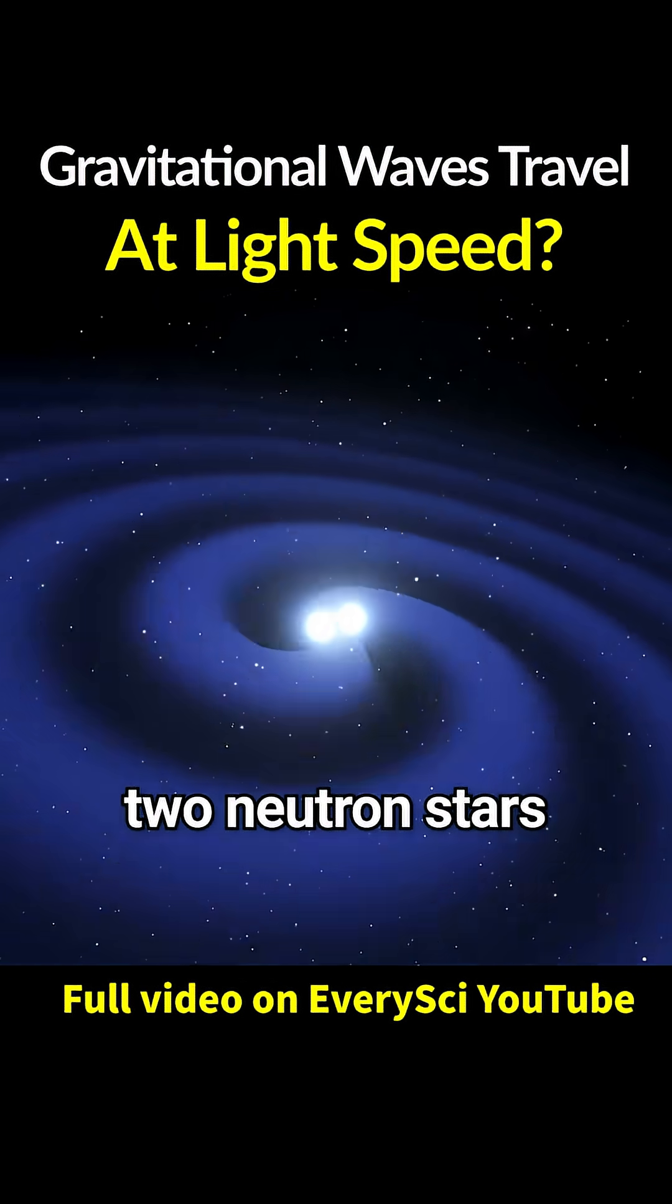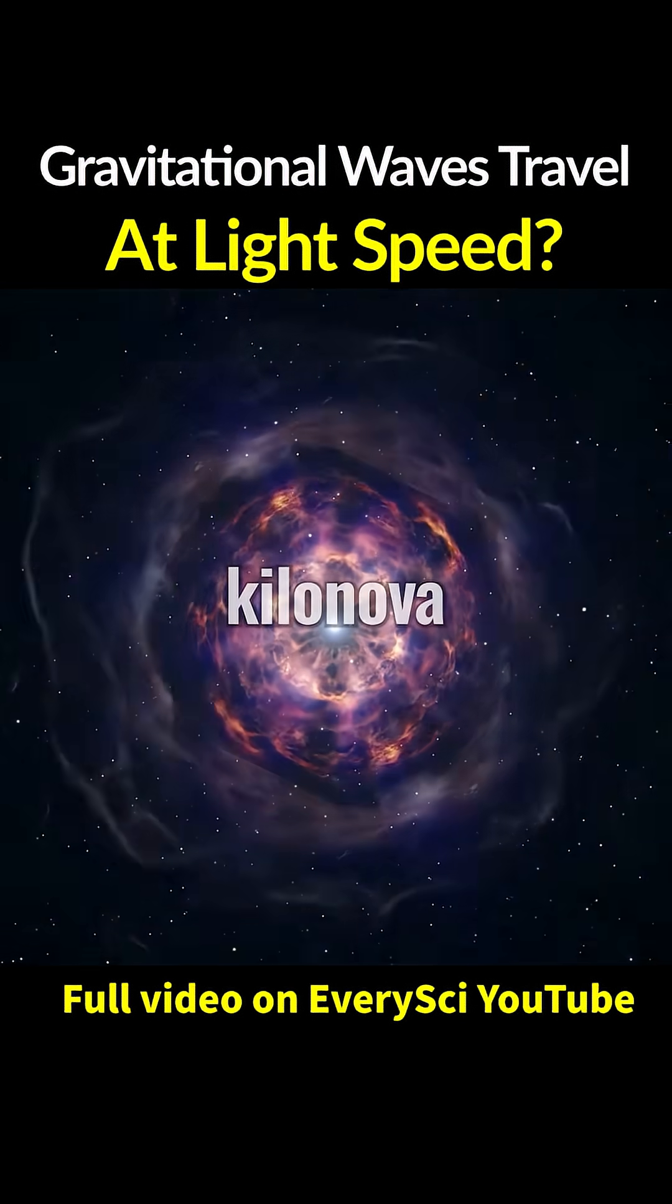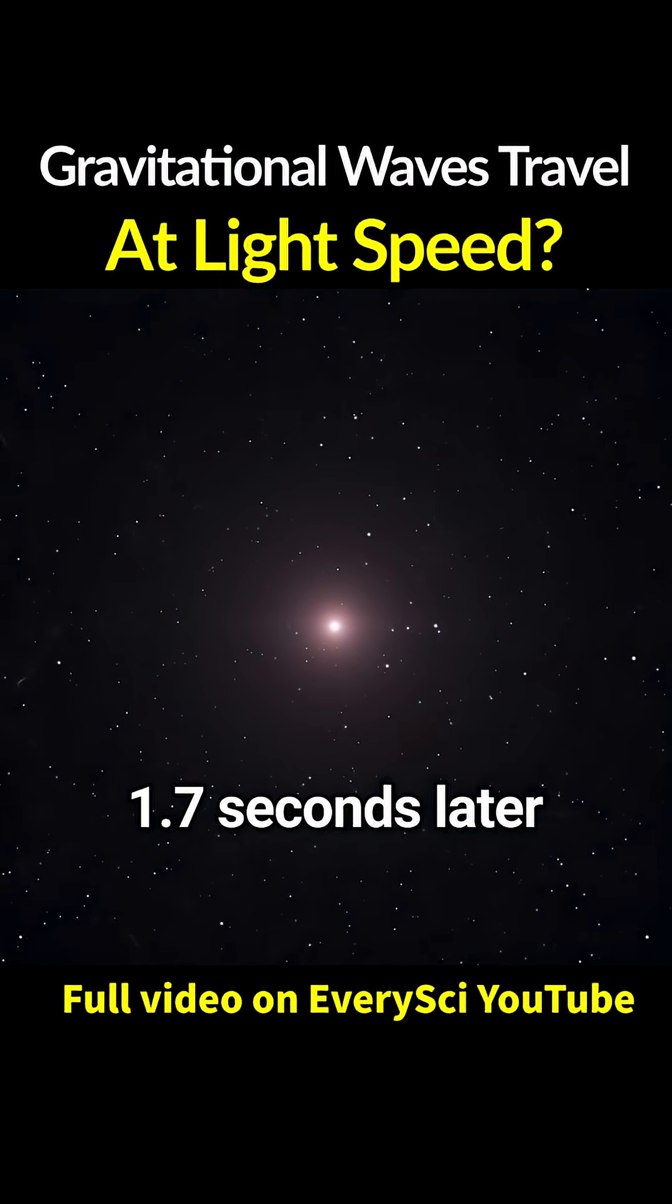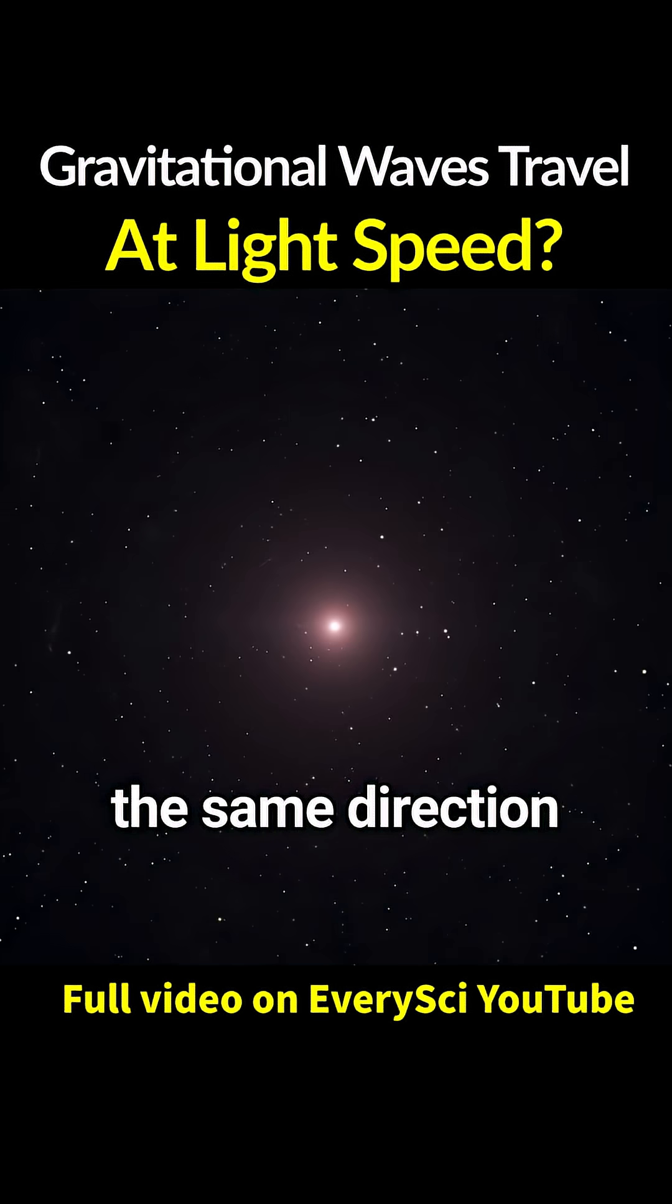In August 2017, two neutron stars collided, creating what's known as a kilonova. At that time, gravitational waves were detected, and just 1.7 seconds later, gamma rays were observed coming from the same direction.